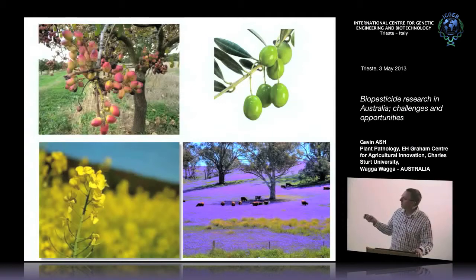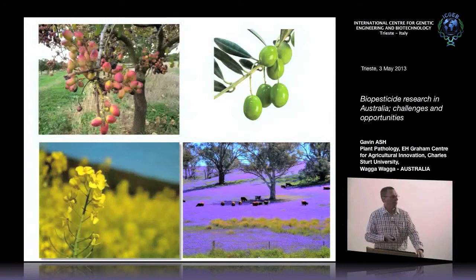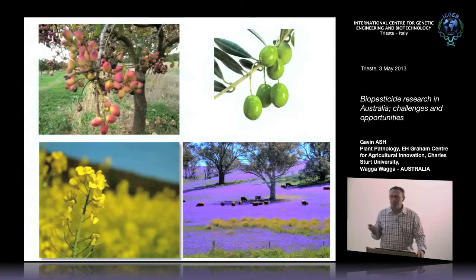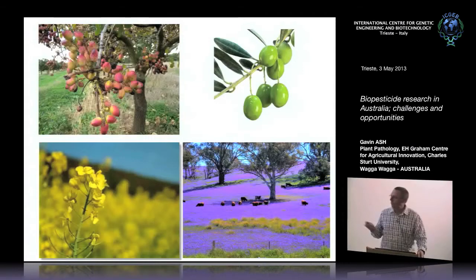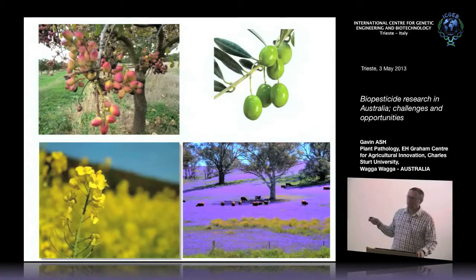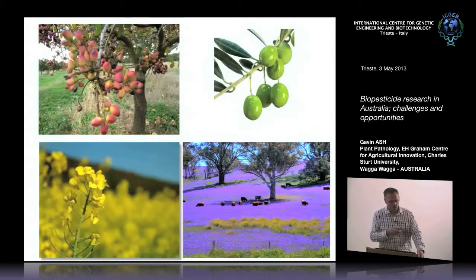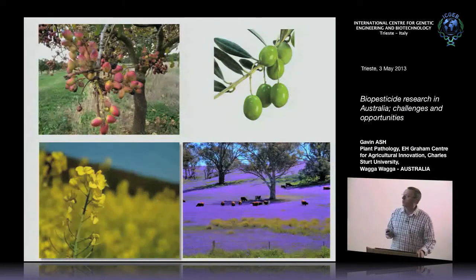This lovely purple flower through here is a weed. It was introduced into Australia as a garden plant, escaped, and has become naturalised. People drive through and say, 'look at the purple, isn't it beautiful?' But this isn't beautiful — this is a weed and it causes enormous problems. One of the ways of controlling it is through biological control. That's my segue into biological control.